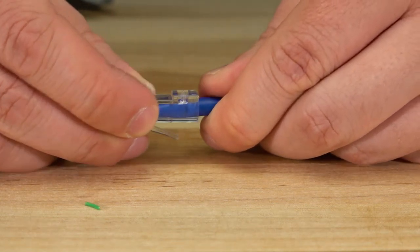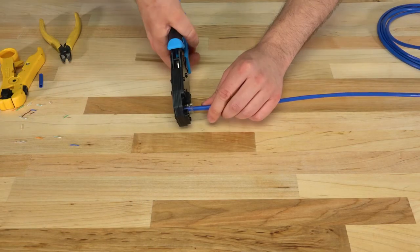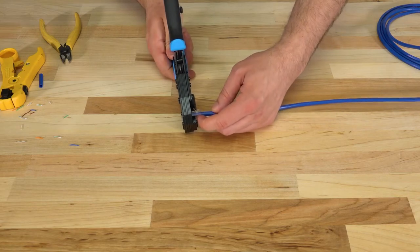Press firmly to ensure the load bar and cable is loaded completely into the connector. Insert the connector into the modular crimp tool and squeeze the handle to crimp the connector down.